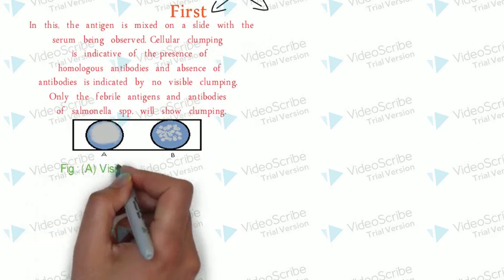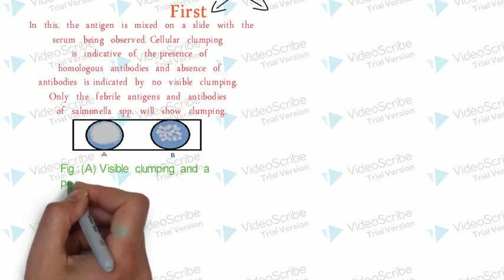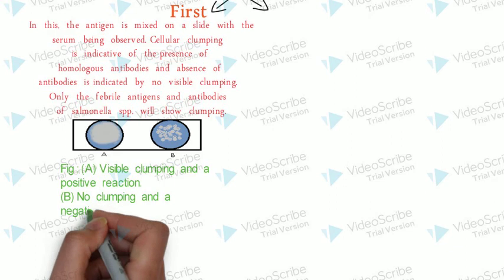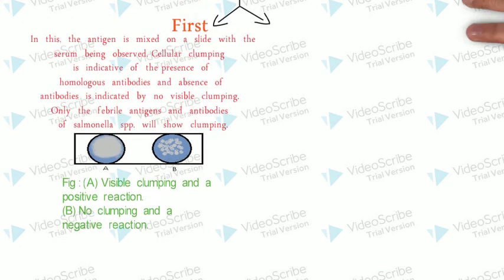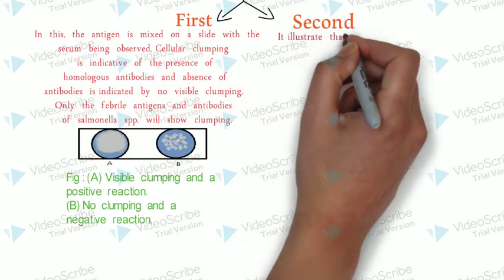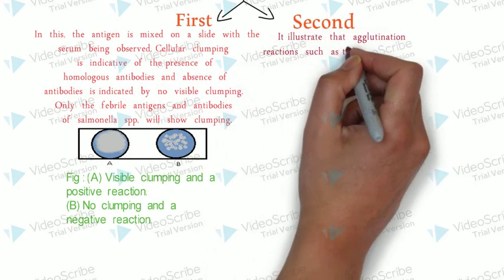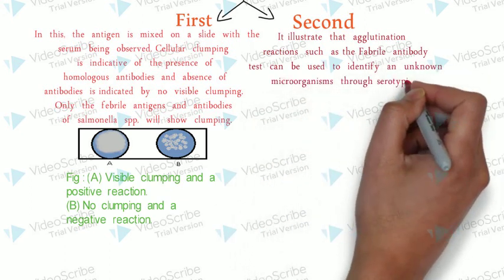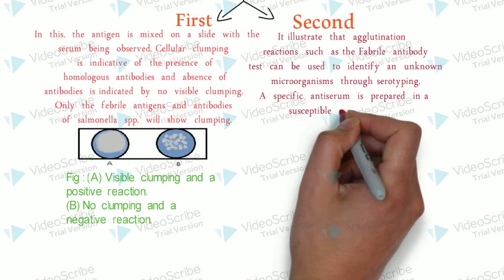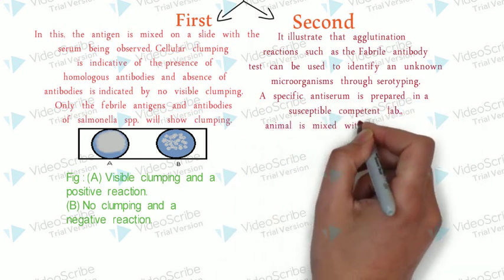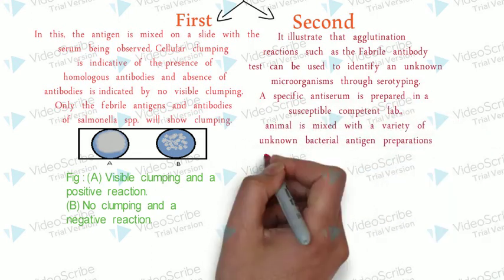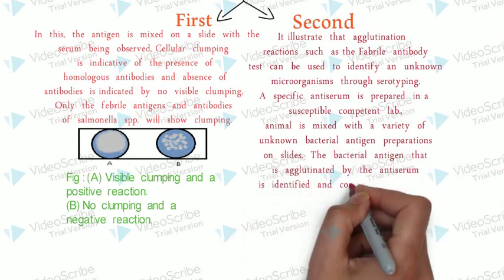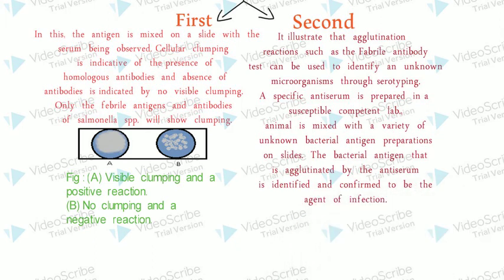In this figure, A shows visible clumping and a positive reaction, and B shows no clumping and a negative reaction. The second part illustrates that agglutination reactions such as the febrile antibody test can be used to identify an unknown microorganism through serotyping. A specific antiserum is prepared in a susceptible laboratory animal and mixed with a variety of unknown bacterial antigen preparations on a slide. The bacterial antigen that is agglutinated by the antiserum is identified and confirmed to be the agent of infection.